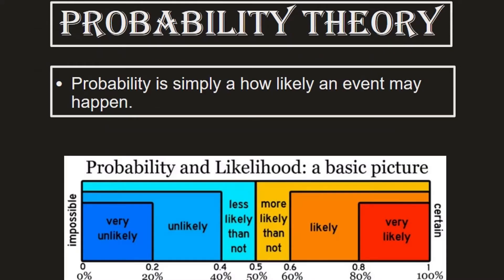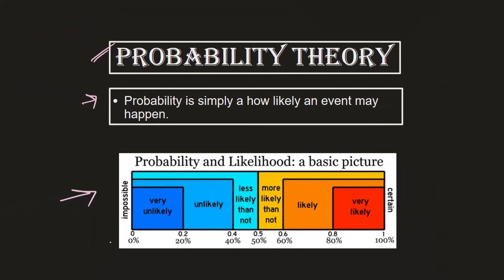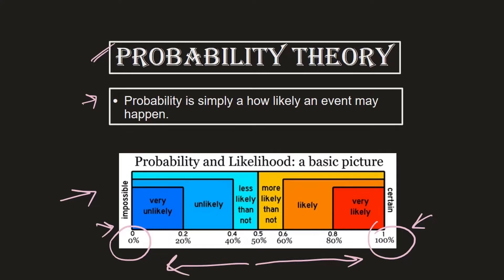Let's quickly discuss probability theory. By the simple definition, probability is simply an estimate of how likely an event may happen. Looking at this figure, probability for an event ranges between a score of zero to one. A probability of one means there is a 100% chance of the occurrence of an event, and a probability of zero denotes the chances are very much against the occurrence of that event. The more you go towards the right means you are more confident around the occurrence of that event.